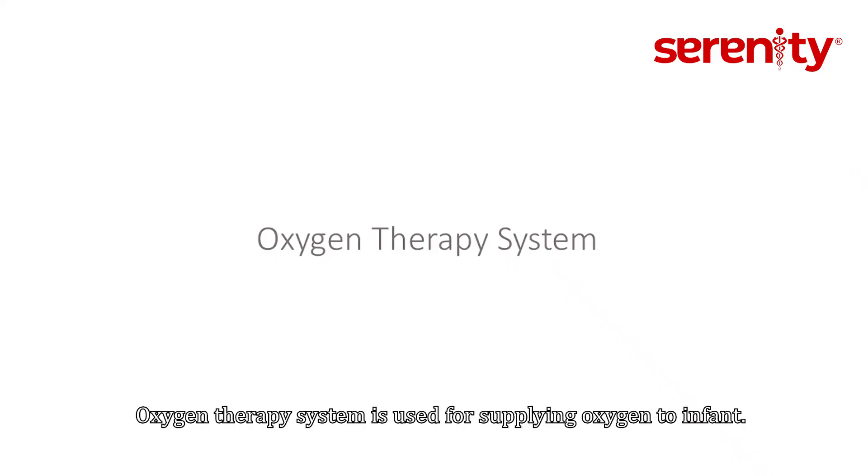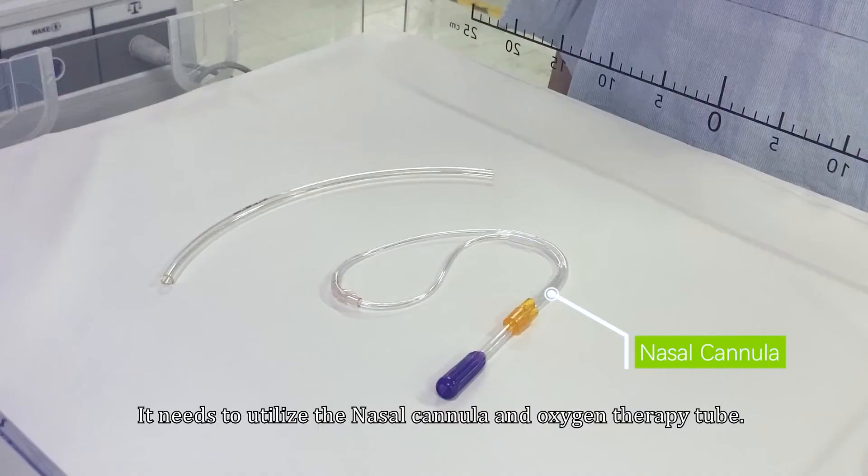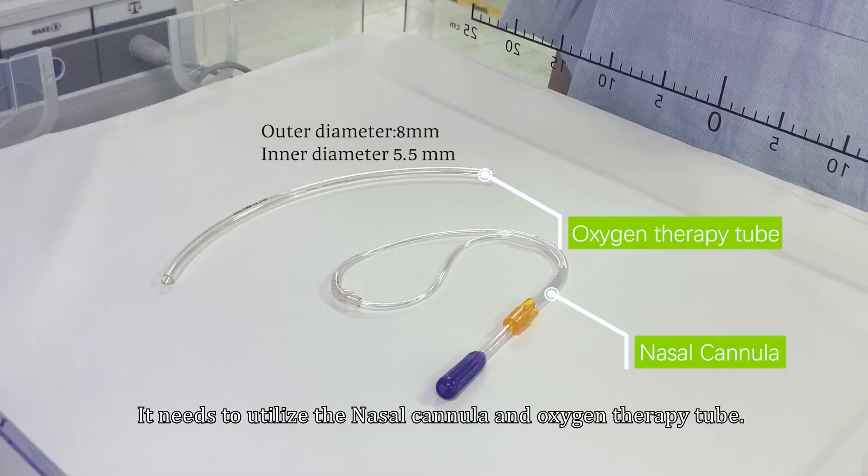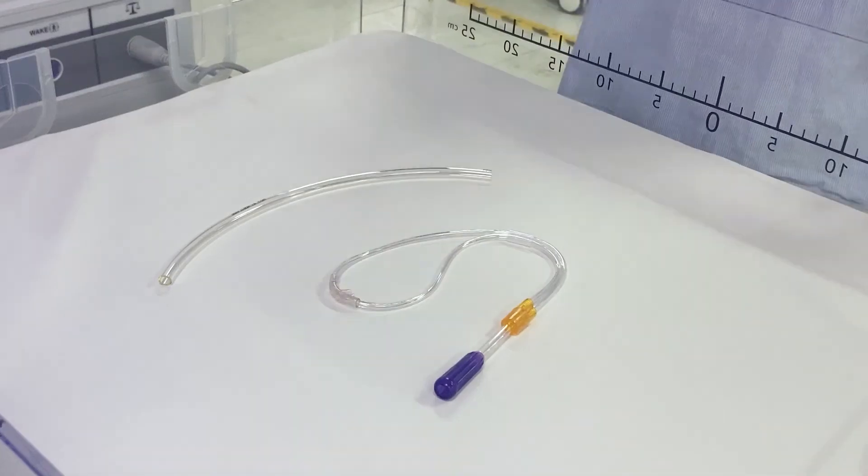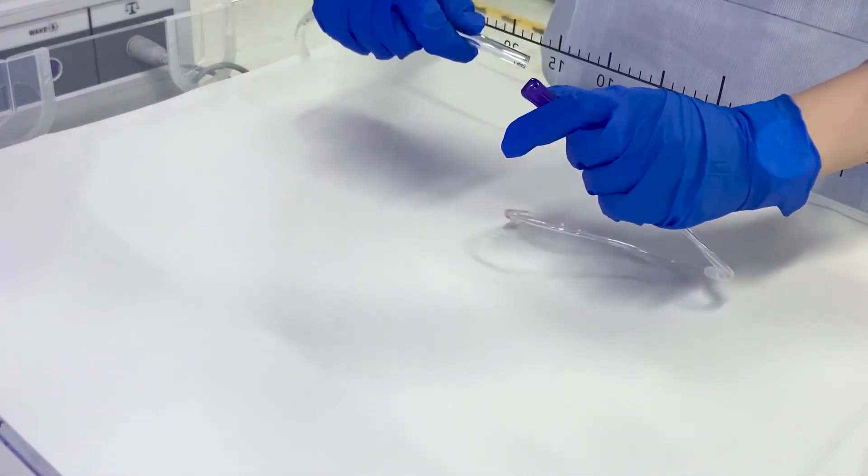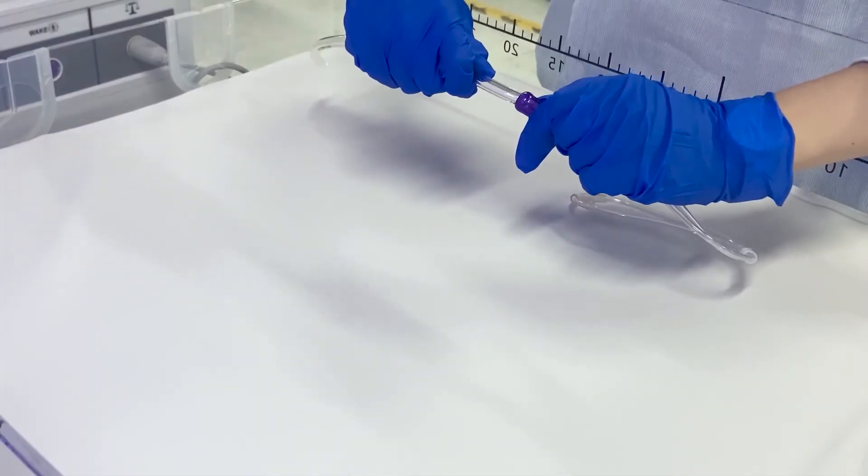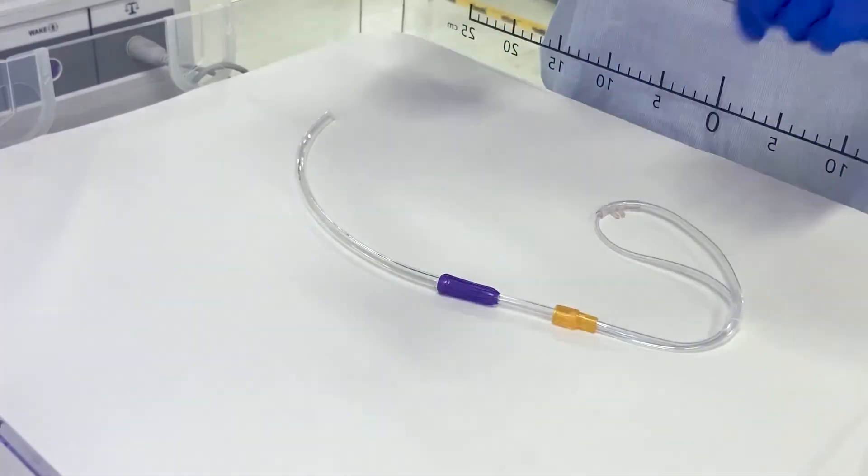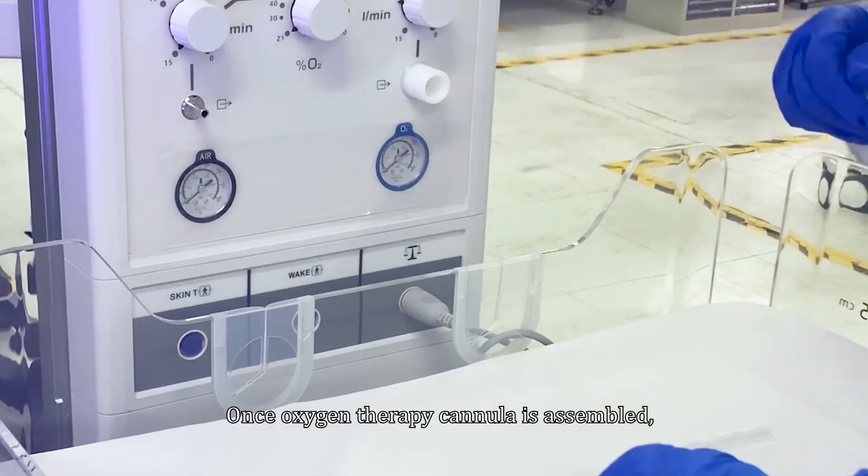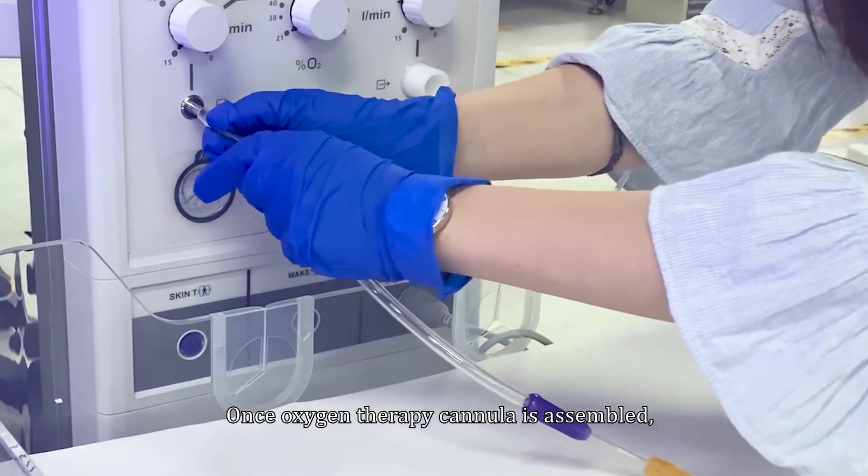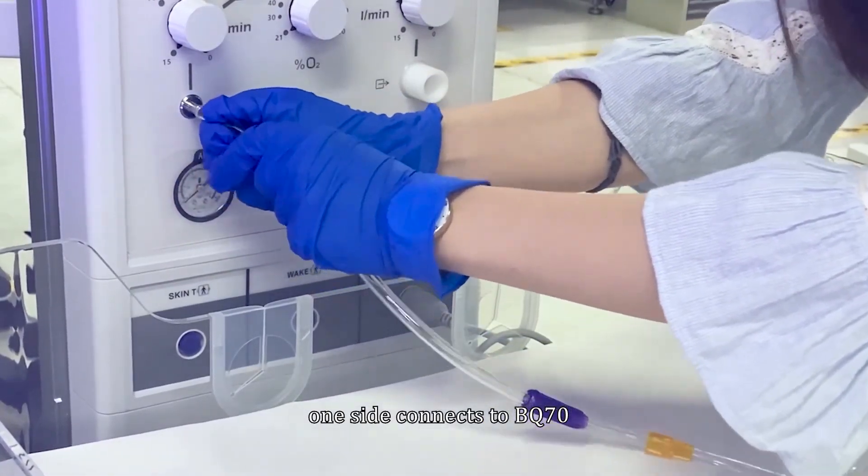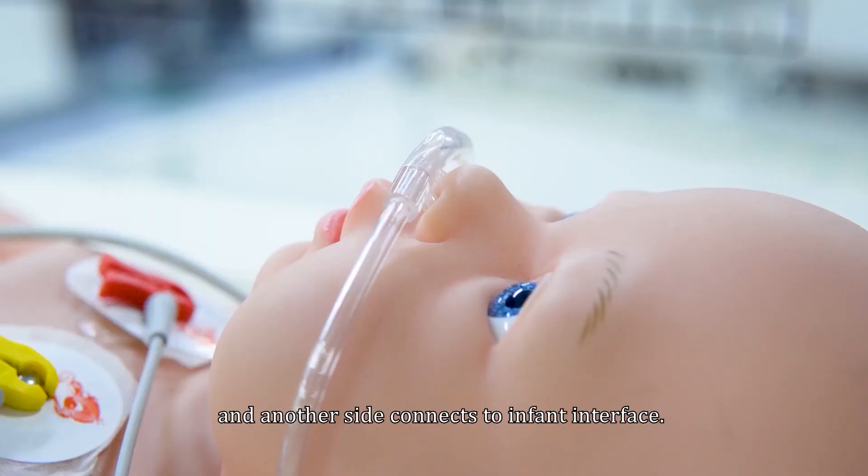Oxygen therapy system is used for supplying oxygen to infant. It needs to utilize the nasal cannula and oxygen therapy tube. Once oxygen therapy cannula is assembled, one side connects to BQ70, and another side connects to infant interface.